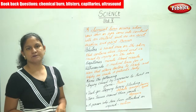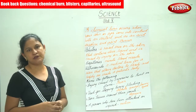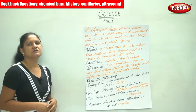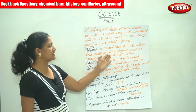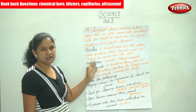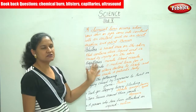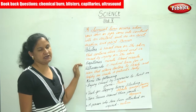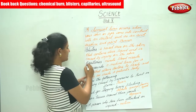A blister should not be pricked because once pricked it is open to all sorts of infection. A blister is a raised area on the skin that contains clear liquid and is caused by injury on the skin.